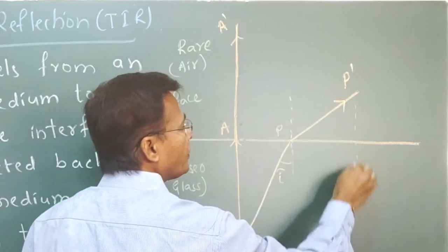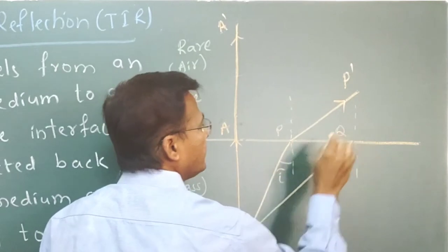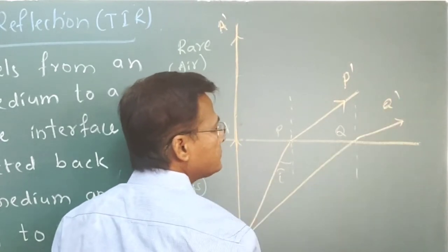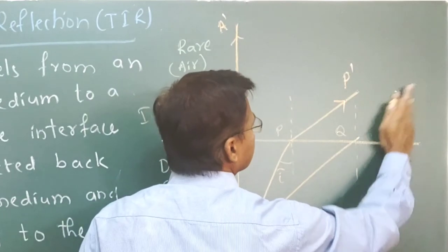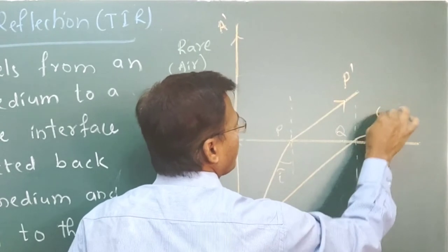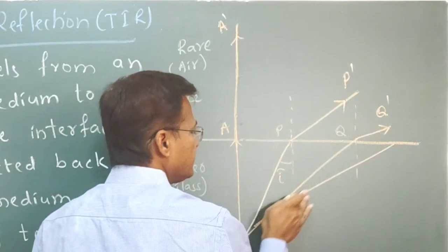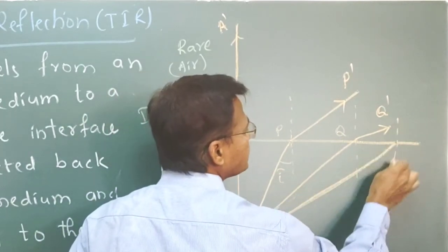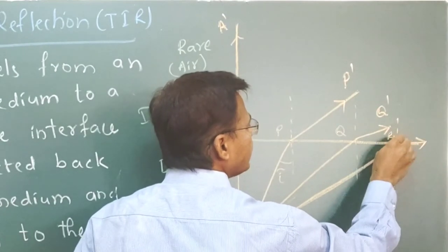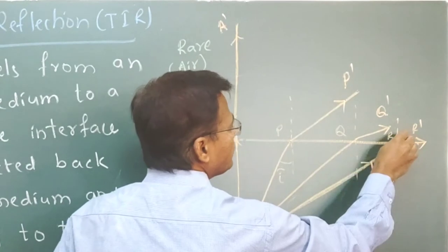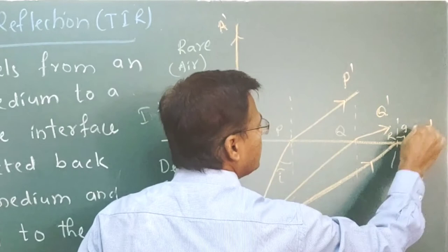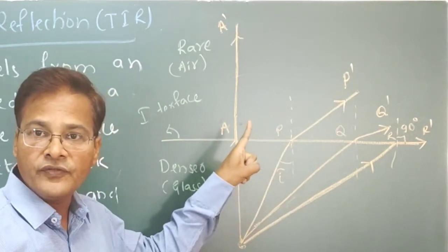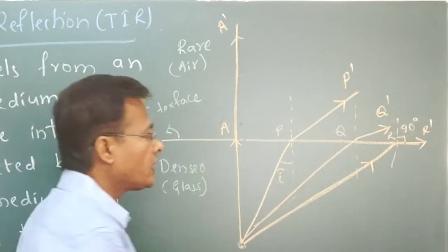For example, this is point Q. As the angle of incidence increases, Q-dash shows greater refraction. Again if I increase the angle of incidence, at a certain angle it will be going to graze — the refracted ray goes along the interface. So the angle of refraction becomes 90 degrees. The angle of incidence for which the angle of refraction becomes 90 degrees — that angle of incidence is called the critical angle.